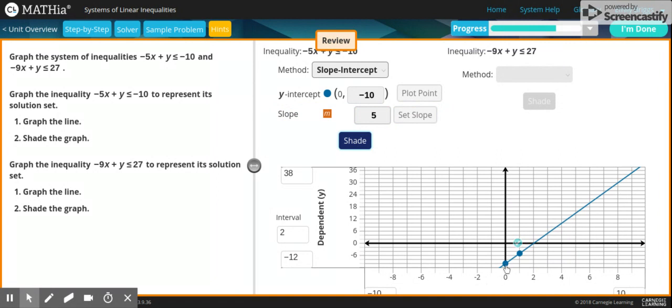You want it to be negative 5 is where it intersects, somewhere right around here. That's your slope, so every 5 it'll touch.